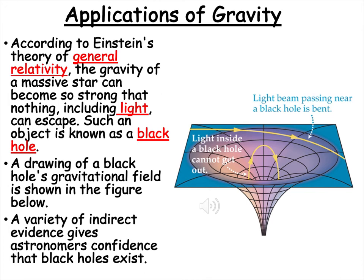Let's look at some applications of gravity. According to Einstein's theory of general relativity, gravity of a massive star can become so strong that nothing, including light, can escape. This is known as a black hole. There's a drawing of a black hole over here, and we have a variety of evidence that tells us that black holes do exist. Basically, around the black hole, light is going to be bent, and then inside the black hole, gravity is going to be so strong that light cannot escape.